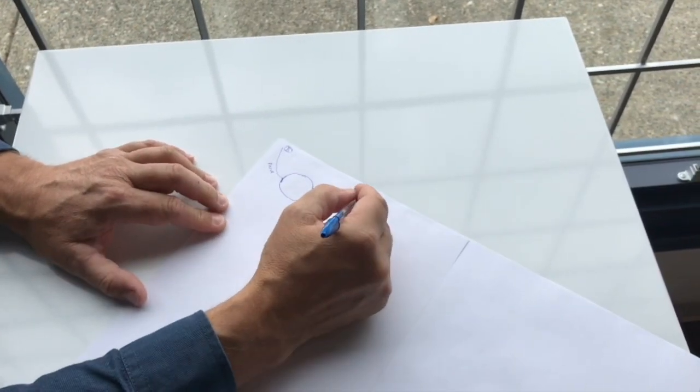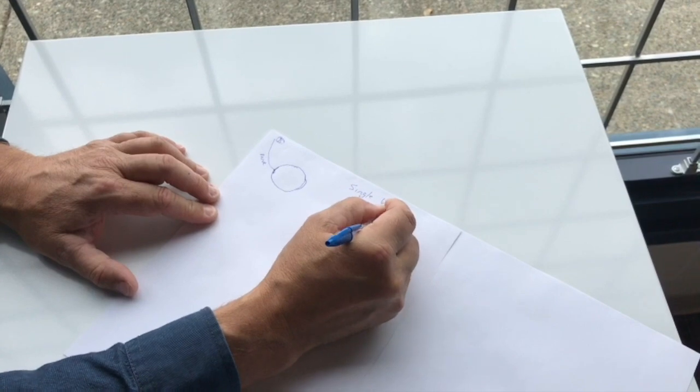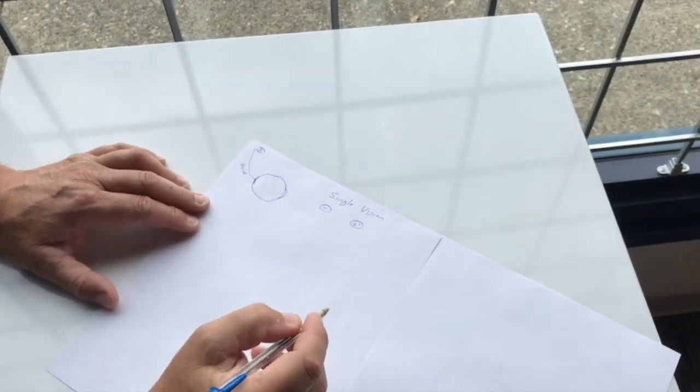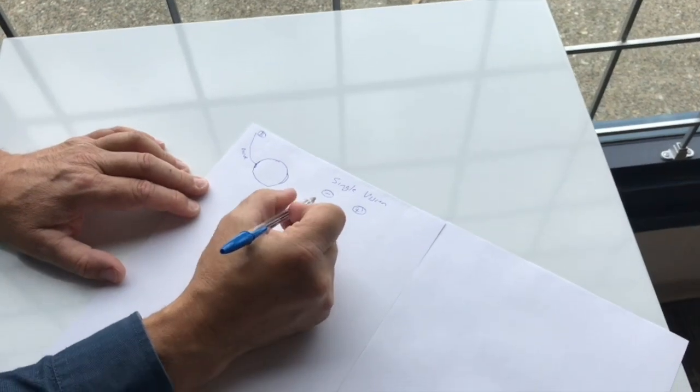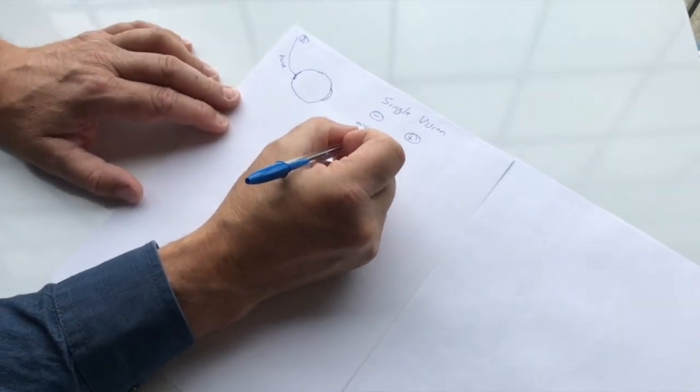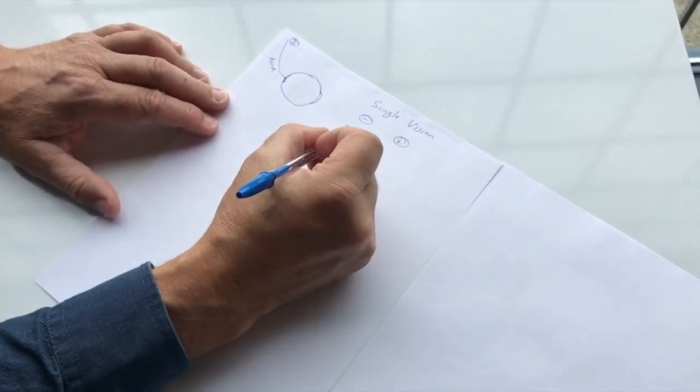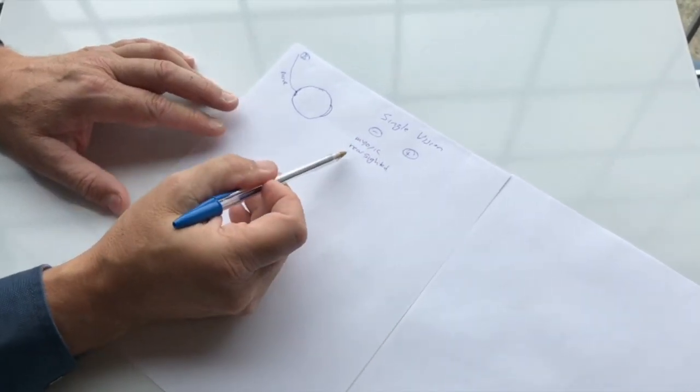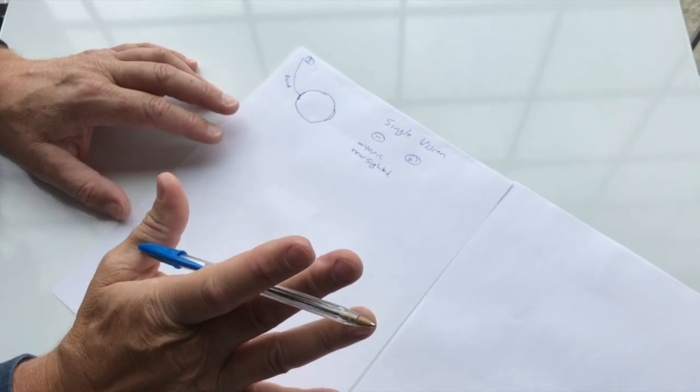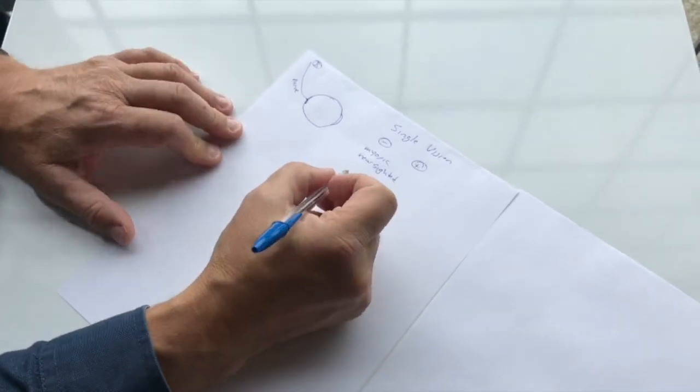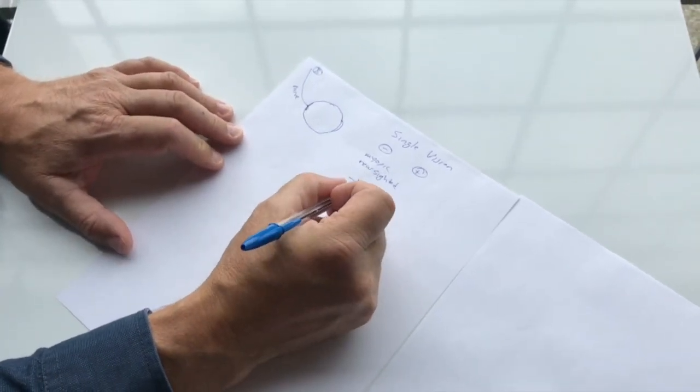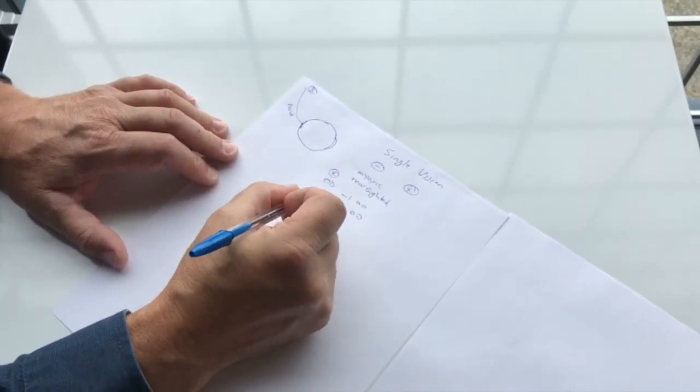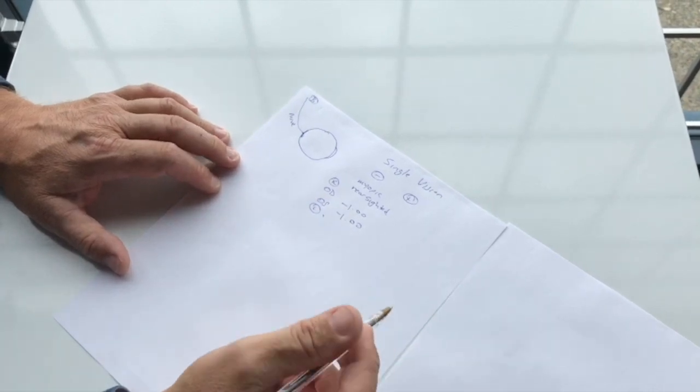So we're going to look at just a single vision prescription. Single vision prescriptions are either negative or positive. So a negative person is a myopic person. They're often referred to as nearsighted because they can see up close really well without any glasses on. A minus prescription example is like a minus one, minus one. OD, that means right eye. OS, that means left eye.